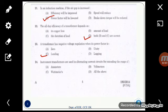Next question is: the instrument transformers are used in alternating current circuits for extending the range of? The answer is all the above. That is, we are using that to extend the range of ammeters, voltmeters, wattmeters, etc. So all the above is the answer here.